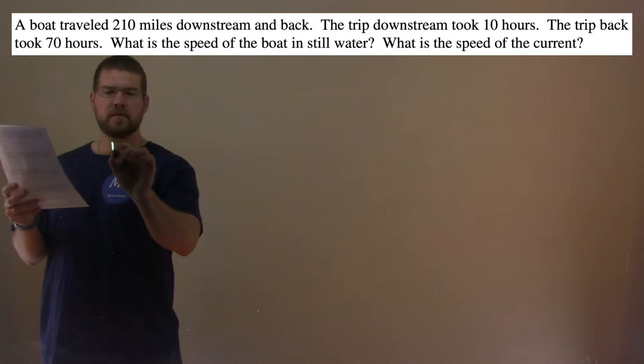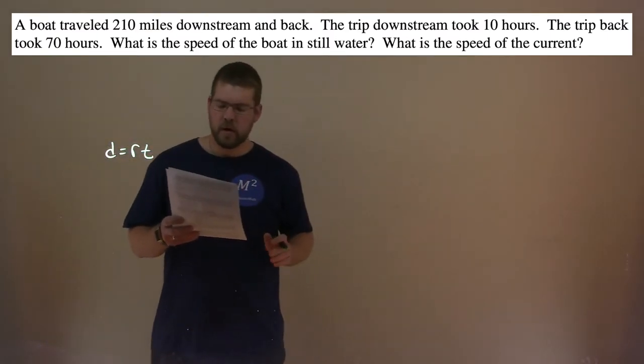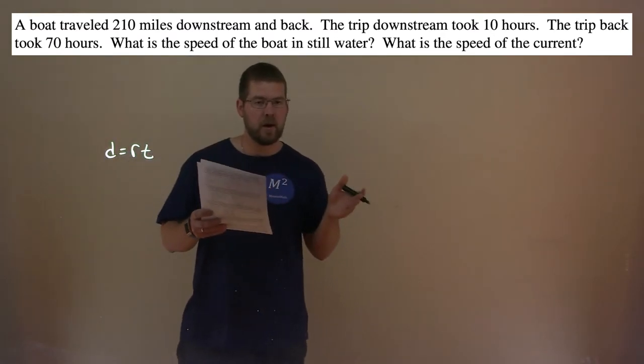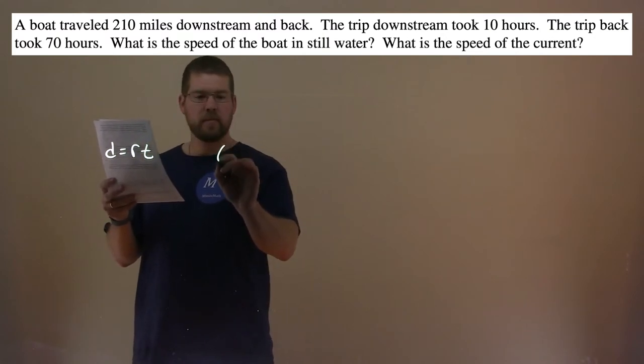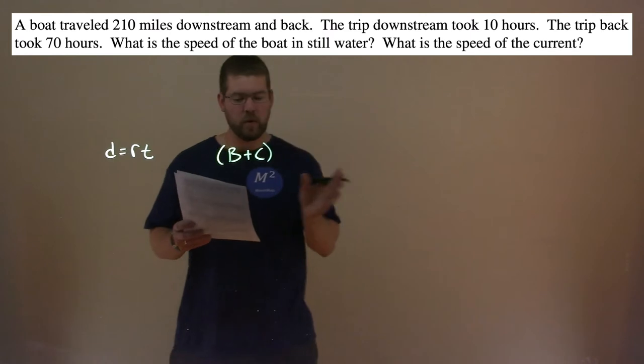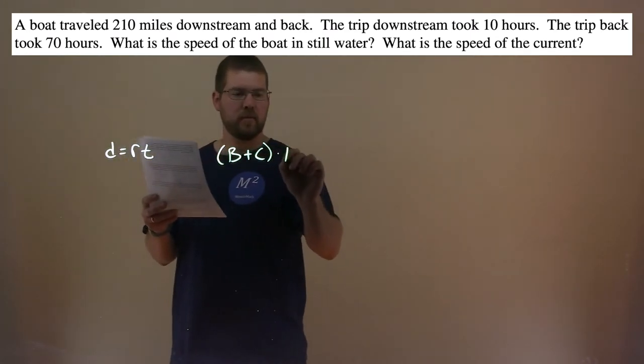Well, we know one formula here. Distance equals rate times time. So, if the boat traveled downstream, and they said it took 10 hours, so our first equation, the speed of the boat plus the speed of the current is going downstream, so it's going with the current. That's our rate times time, they said was 10 hours.